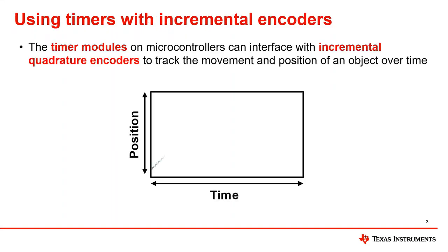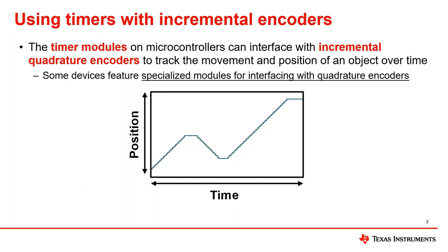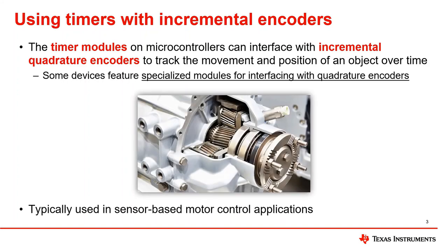Timers can be used to interface with quadrature encoders and derive important movement information like speed, direction, and position at a specific instant in time. Decoding these quadrature impulses involves feeding these signals into microcontrollers to measure signal information such as their period and frequency. Some devices feature a specialized timer module specifically for interfacing with quadrature encoders — these modules could be called quadrature encoder pulses or quadrature encoder interfaces. Other devices may use a generic timer module. These quadrature encoders are used in various applications such as sensor-based motor control and robotics.